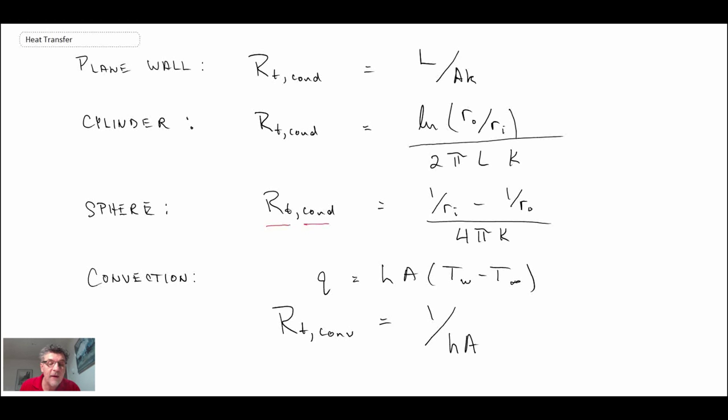So there we go, we have thermal resistances for conductions in a plane wall, a cylinder, a sphere, as well as for convection. And with this, what we can do is put these together. First of all, we can say that high thermal resistance, if we have high thermal resistance, that would be analogous to being a good insulator.